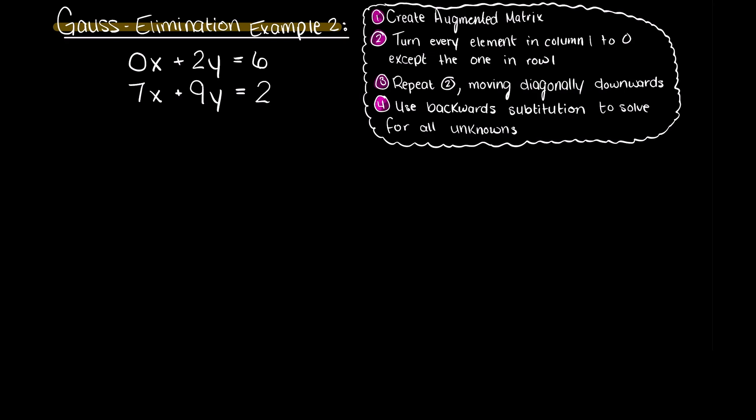Which means we need to solve for our two unknown variables x and y in the following system of linear equations. On the right here I have placed the steps that we will follow in order to solve a system of equations using Gauss elimination.